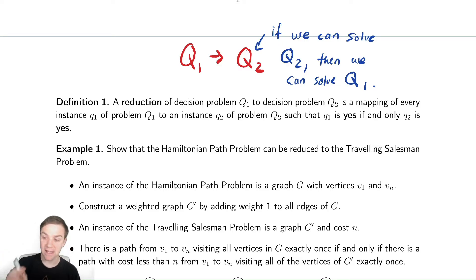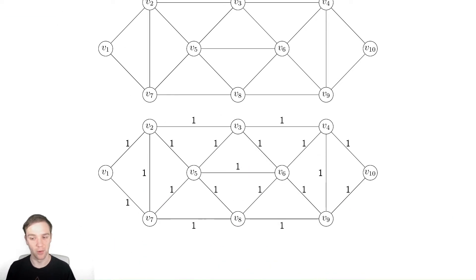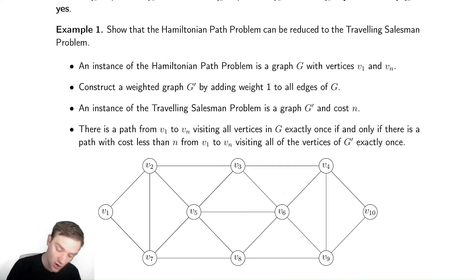We're then going to make a different graph that we're going to solve the traveling salesman problem on. So we're going to make a weighted graph G prime and just put one as all of the edge weights. So given a graph, make a graph with edge weight one for everything, really straightforward. And then we're going to call this new graph, an instance of the traveling salesman problem. And we're going to say the cost is N.